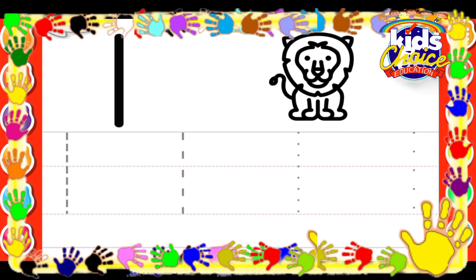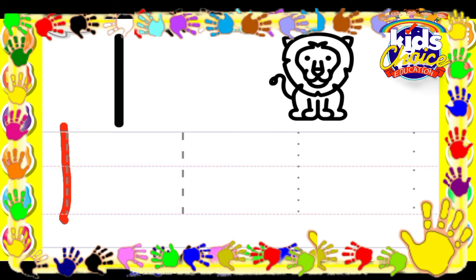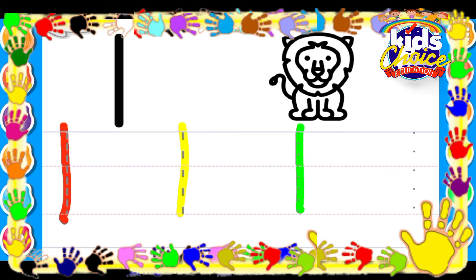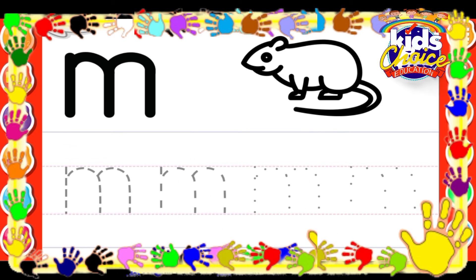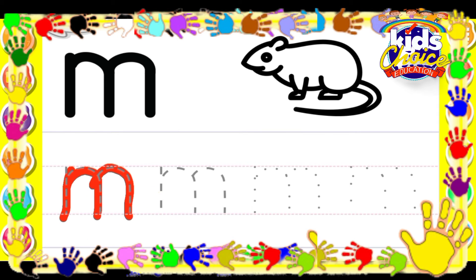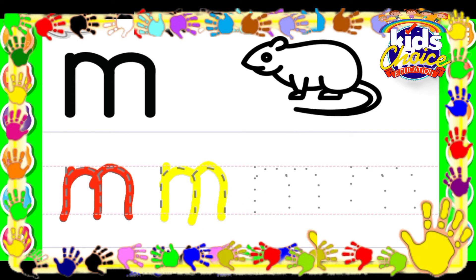L for Lion. Yellow. Green. Blue. N for Mouse.